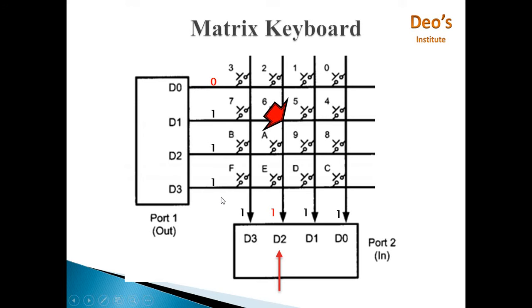It is an output port, so you can do that very easily. D0 is made 0 and D1, D2, D3 are made 1. So though this is made 0, there is no connection, there is no lines short here, so all values will be 1 1 1 1 at port 2.